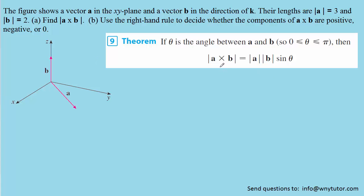Theorem number 9 of Chapter 12, Section 4 tells us that the length of this cross product between the two vectors is equal to the product of the magnitude of vector A, the magnitude of vector B, and then the sine of the angle between them.